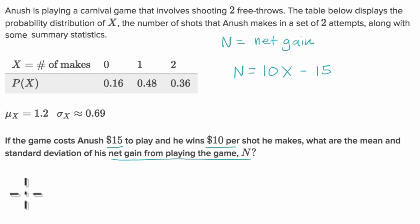In fact, we could set up a little table here for the probability distribution of N. So let me make it right over here. So I'll make it look just like this one. N is equal to net gain. And here we'll have the probability of N. And there's three outcomes here.